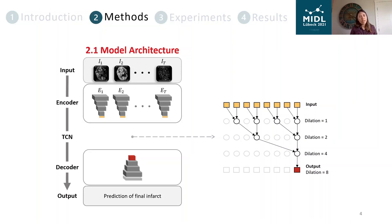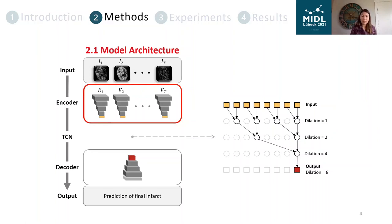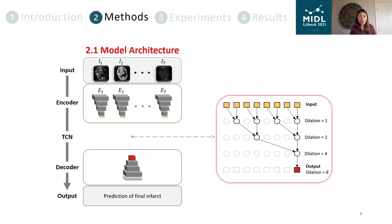Let us assume we're given an input sequence with T time points. First, a series of encoders E with the same structure are built in parallel to independently map each image of the sequence to a latent space. These latent vectors are concatenated and then passed into the TCN, which uses causal convolutions with increasing dilation to merge the temporal information across different time points.